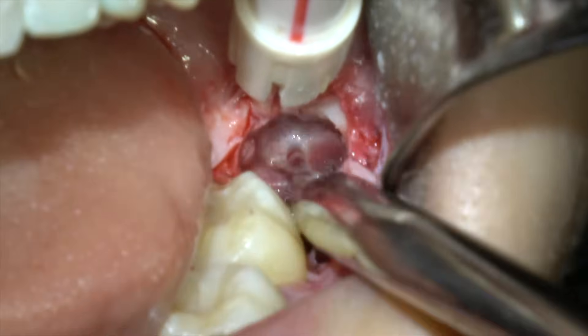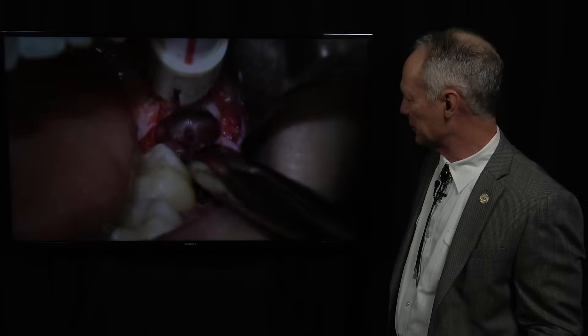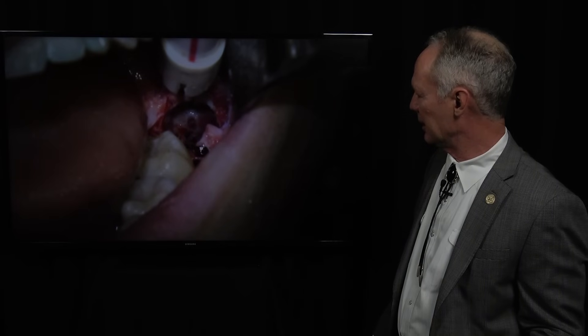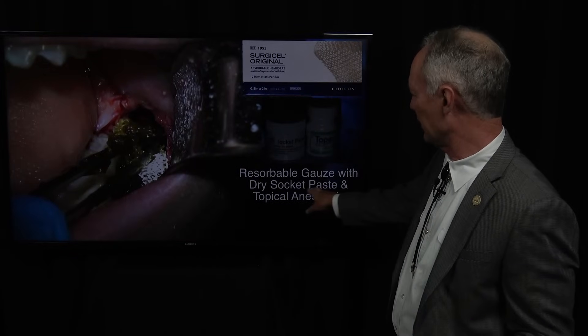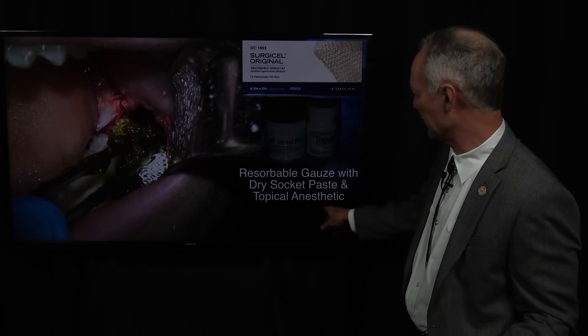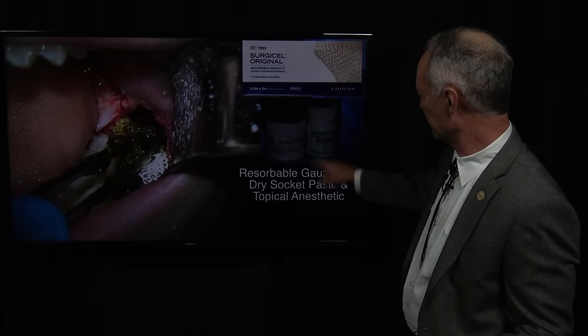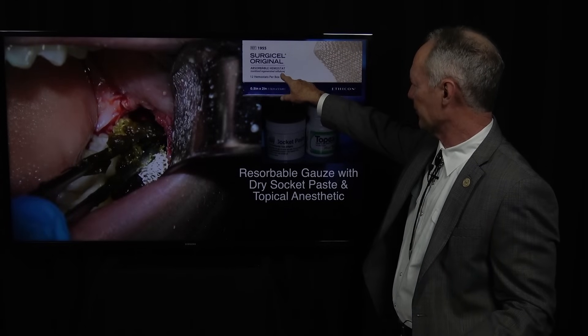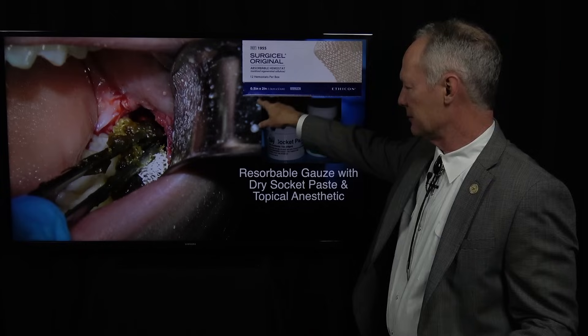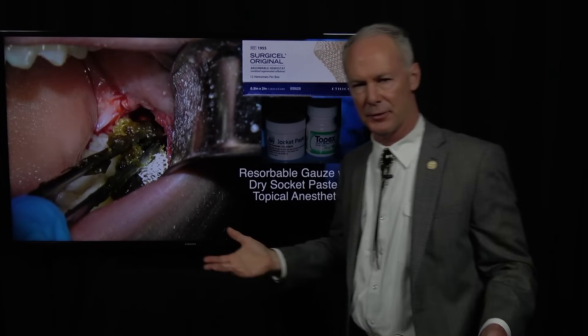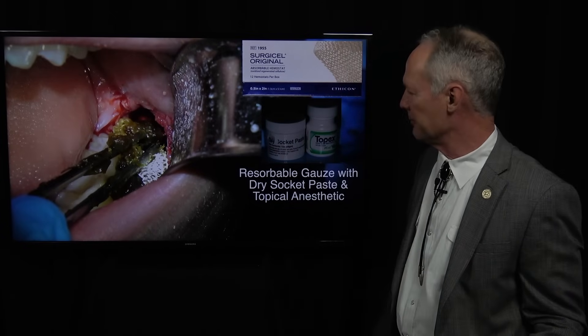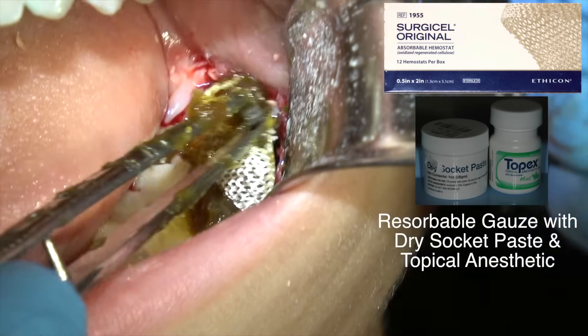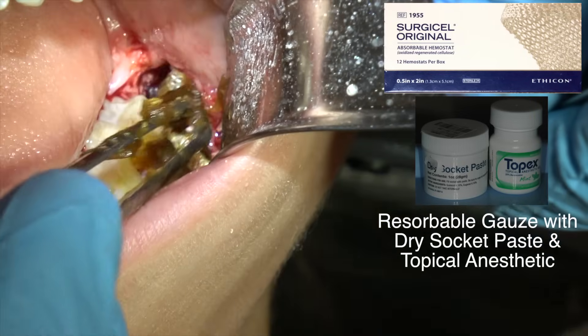Now you're going to irrigate the socket so that any remaining small pieces come out. And then we're going to pack it with resorbable gauze with dry socket paste and topical anesthetic. This is socket paste and Topex topical anesthetic. This is Surgicel absorbable gauze. I'm going to put the paste on the gauze. Now I always do this if I've had to cut bone. I always pack the socket if I've had to cut bone.